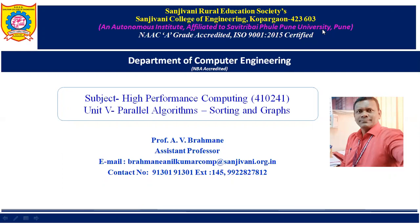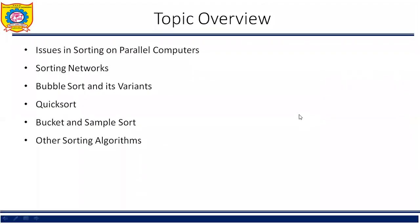The name of unit number 5 is Parallel Algorithms: Sorting and Graphs. Under this unit, we will learn the following topics: Issues in Sorting on Parallel Computers, Sorting Network, Bubble Sort and its Variants, Quick Sort, Bucket and Sample Sort, and Other Sorting Algorithms.